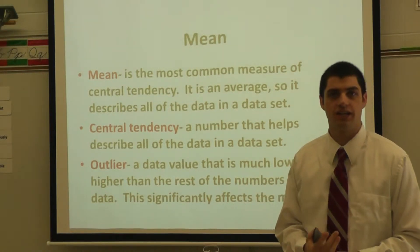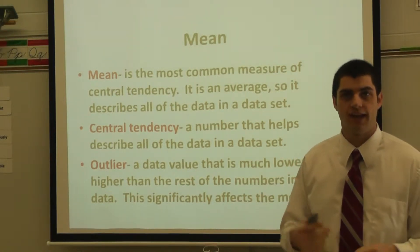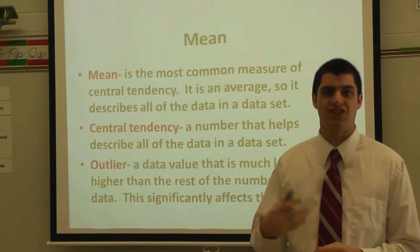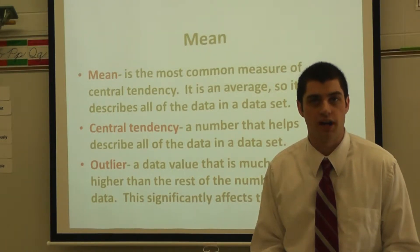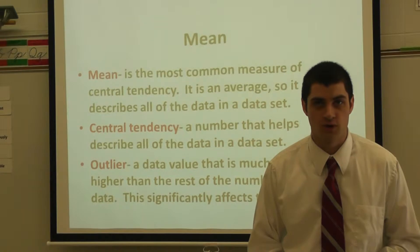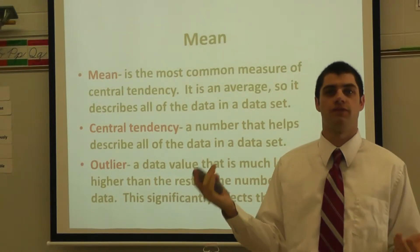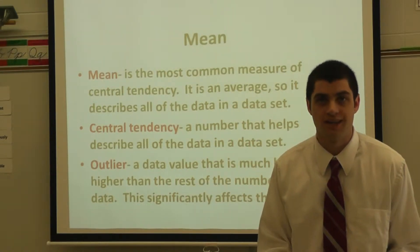So imagine you're taking a math test and you score 100%. And on your second test you score a 95, and on your third test you score a 95. On your fourth test you score a 90%, and all of a sudden on the fifth test you score a 30%. That's an outlier.